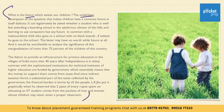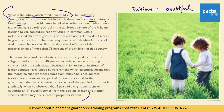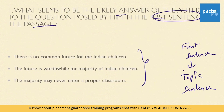The underlying assumption of the question — that Indian children have a common future — is itself dubious. The word 'dubious' means doubtful. The question in the first line itself suggests some hesitation. It is important that you understand the author's opinion. According to the author, the assumption of Indian children having a common future is doubtful. Therefore the correct option is: 'there is no common future for Indian children.'